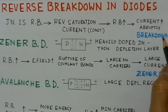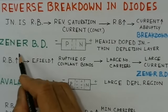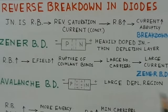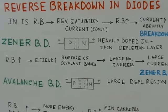This is what happens in reverse-biased diodes. We will now consider two kinds of breakdown mechanisms: one is the Zener breakdown and the other is the avalanche breakdown.